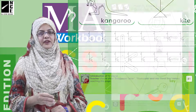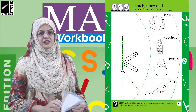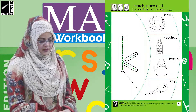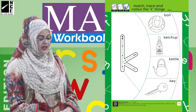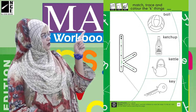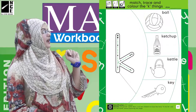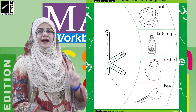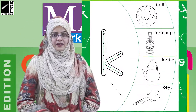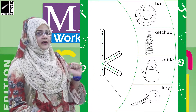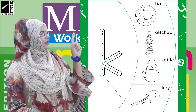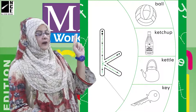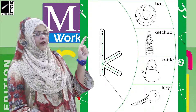Page number 62 پہ ہمارے پاس کچھ pictures ہیں اور ایک big 'کھ' بھی ہے۔ Big 'کھ' کو دیکھیں — یہاں پر ایک dotted line کی help سے انہوں نے join کیا ہوا ہے، یعنی match کیا ہوا ہے۔